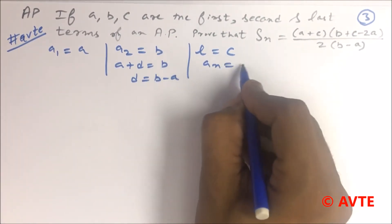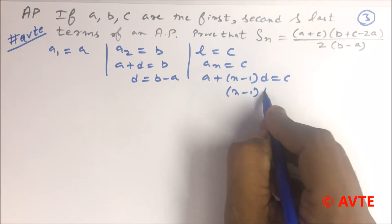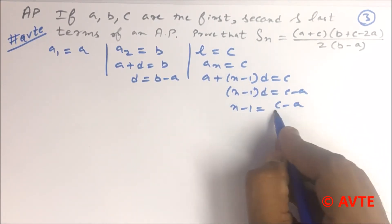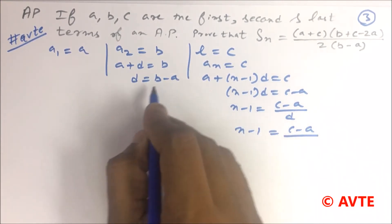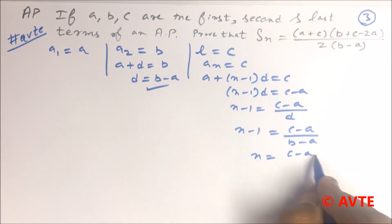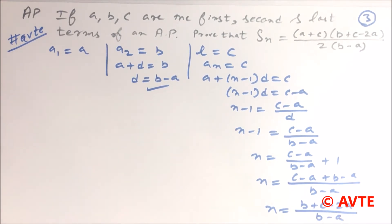It means your AN is C, that is A plus (N minus 1) times D equals C. Now N minus 1 is (C minus A) upon D. That is N minus 1 equals (C minus A) upon D. The value of D is B minus A. The value of N is (C minus A) upon (B minus A) plus 1. The value of N is (C minus A plus B minus A) upon (B minus A). The value of N is (B plus C minus 2A) upon (B minus A).